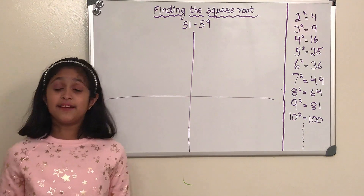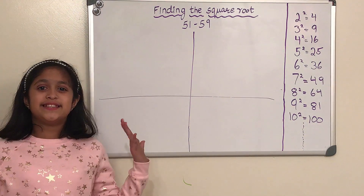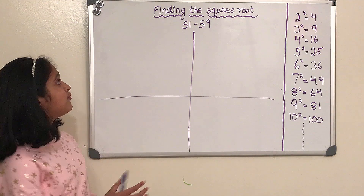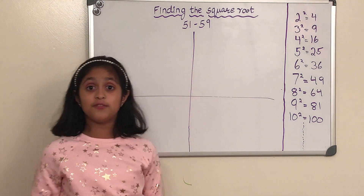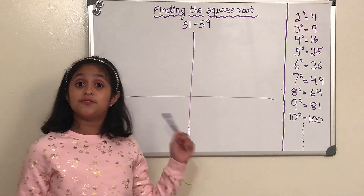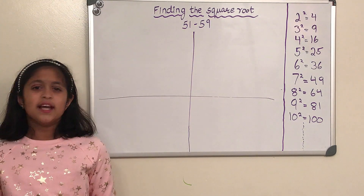Thanks for tuning back in on NPStation. So let's dive in to finding the square of numbers 51 through 59.